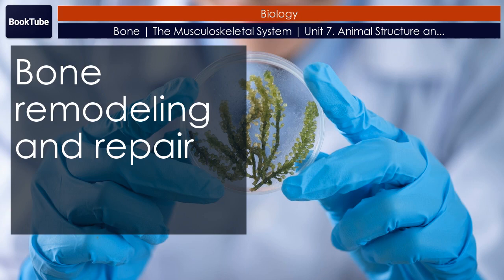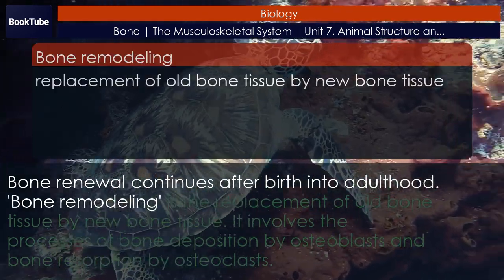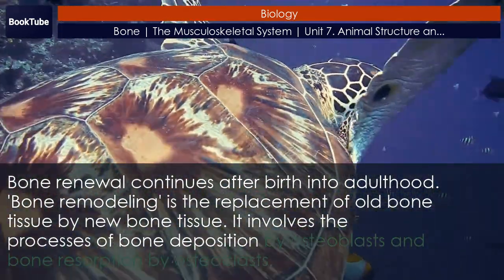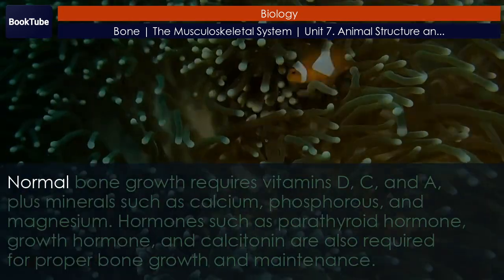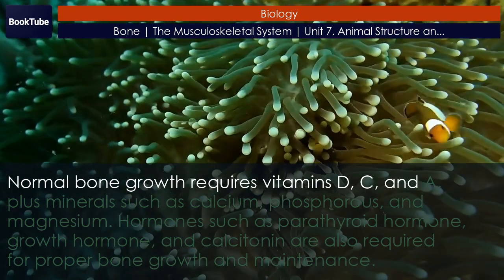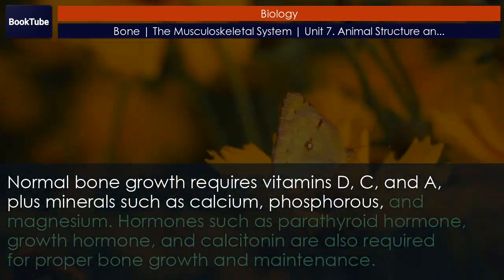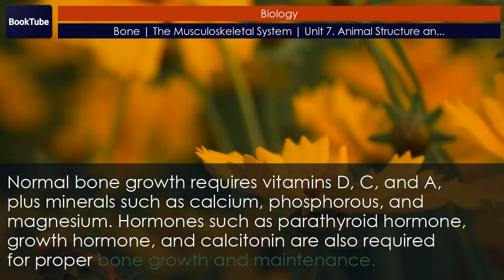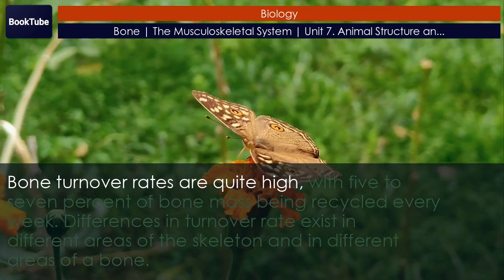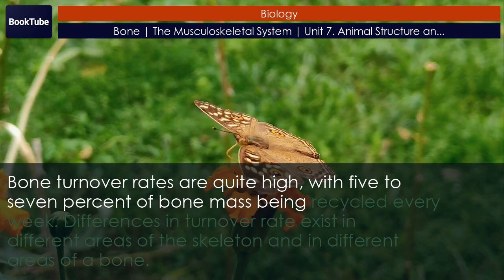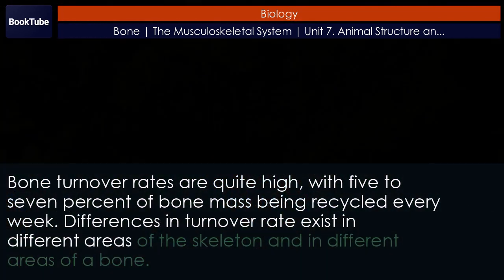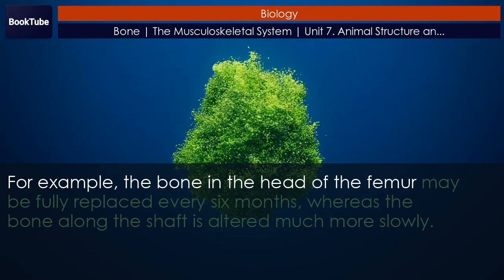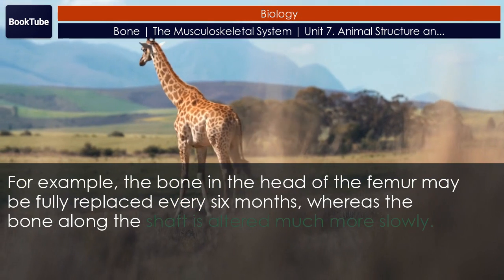Bone renewal continues after birth into adulthood. Bone remodeling is the replacement of old bone tissue by new bone tissue — it involves the processes of bone deposition by osteoblasts and bone resorption by osteoclasts. Normal bone growth requires vitamins D, C, and A, plus minerals such as calcium, phosphorus, and magnesium. Hormones such as parathyroid hormone, growth hormone, and calcitonin are also required for proper bone growth and maintenance. Bone turnover rates are quite high, with 5–7% of bone mass being recycled every week. Differences in turnover rate exist in different areas of the skeleton — for example, the bone in the head of the femur may be fully replaced every six months, whereas the bone along the shaft is altered much more slowly.